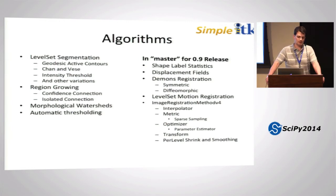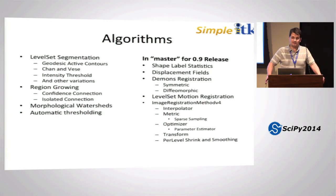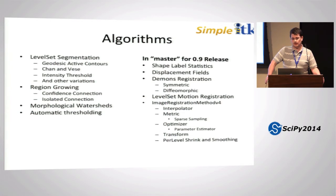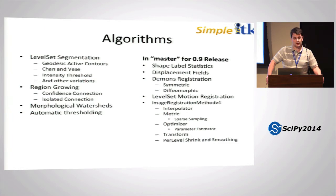Additionally highlighted algorithms include several level-set implementations including geodesic active contours, which has both a speed image and an advection vector image to control the level-set. There are also basic region-growing algorithms, watersheds, and a large number of automatic thresholding methods. The upcoming fall release of version 0.9 will include additional statistical attributes, registration work including Demons registration, and the ITK image registration method — which contains four modular components: an interpolator, a metric, an optimizer, and a transform — with over 10,000 different permutations possible.